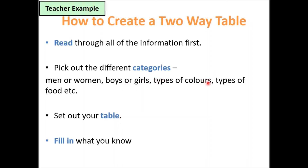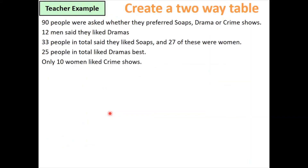The categories could be boys, girls, favourite colours, favourite food — whatever. Then set the table out. This can just be a basic sketch. In an exam, they usually give you a fairly large space for this type of question. Once you've sketched the table, fill in the data you know. After filling in the given numbers, you can work out the missing stuff.